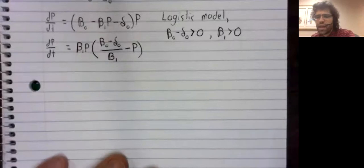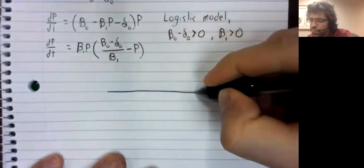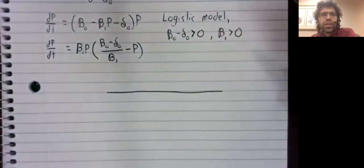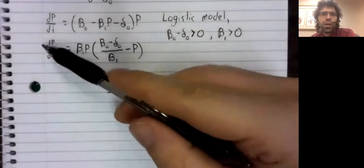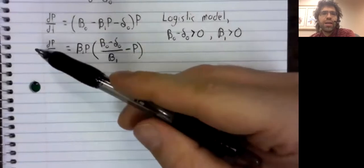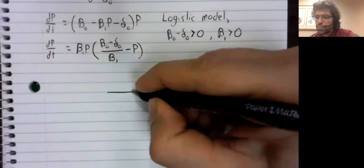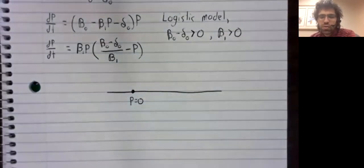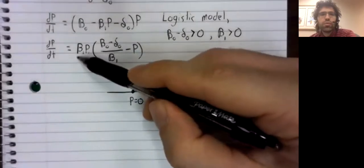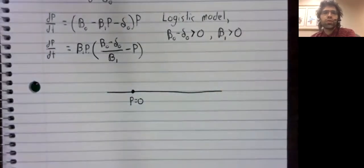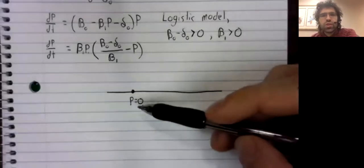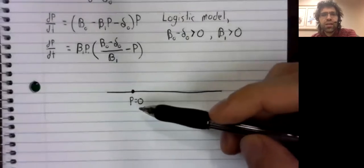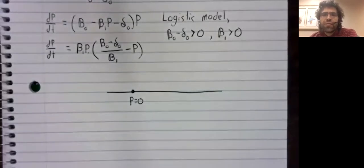There are two places where the derivative of the population with respect to time is zero. One of them is P equals zero. If P equals zero, this product is zero and the entire derivative is zero. And that makes sense. If P equals zero, the population has gone extinct and it remains at zero forever, neither increasing or decreasing.